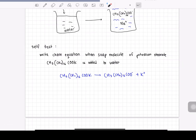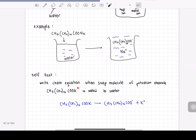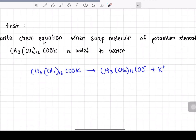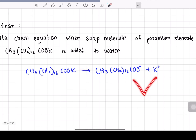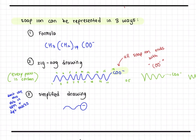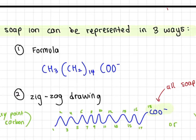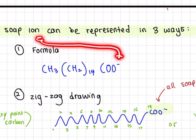Moving on to the self-test: write a chemical equation when the soap molecule potassium stearate is added into water. You're just going to draw an arrow indicating it's ionizing in water and separate the two parts — you produce metal ion as well as soap ion.